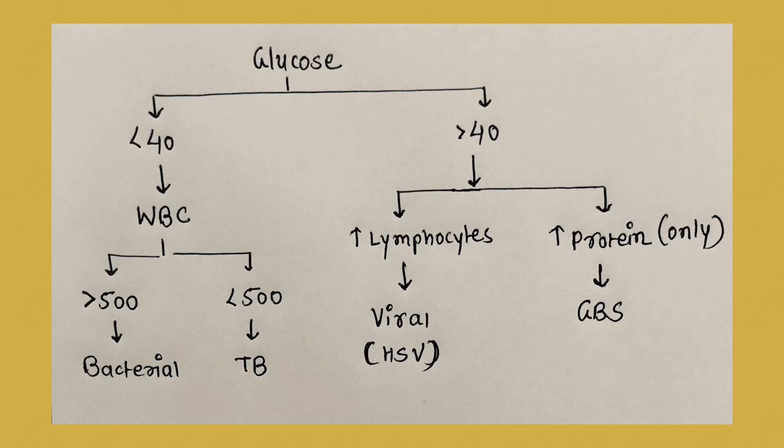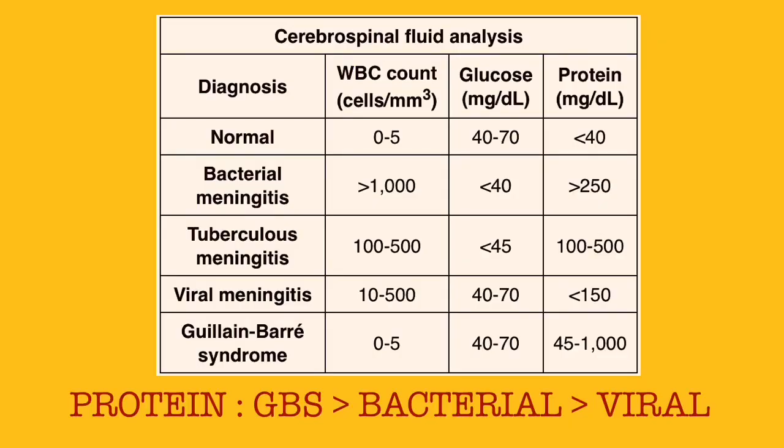If glucose is normal or greater than 40, then focus on lymphocytes and protein. If there is lymphocyte predominance, then it's going to be viral meningitis. And if only the protein amount is elevated, then obviously it's GBS. You don't need to remember every value in this table.